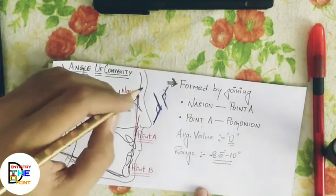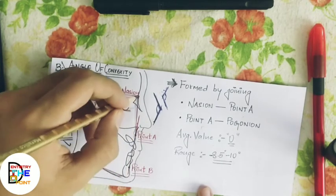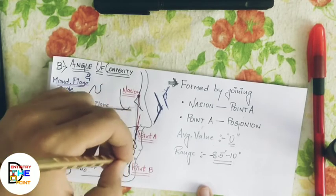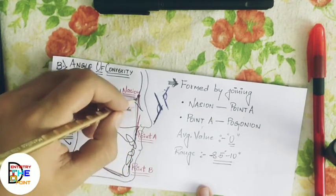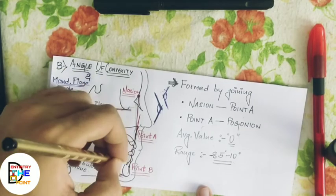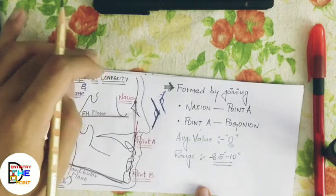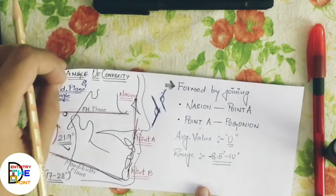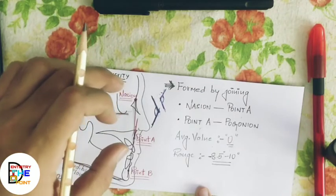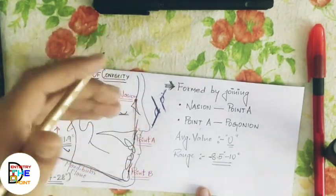The second skeletal parameter is the angle of convexity. The first line is drawn from nasion to Point A, and the second line is drawn from Point A to Point B. Both lines form a small amount of convexity in the facial plane, and the angle measured between them is called the angle of convexity. If this angle is increased, it suggests the maxillary denture base is more prominent compared to the mandible.